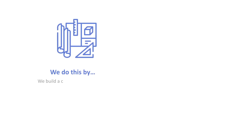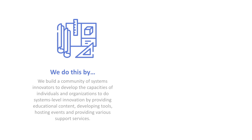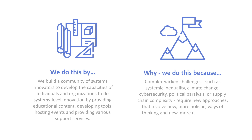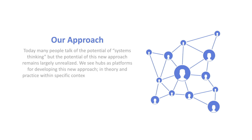Here's what we do and why we do it. We do it by building a community of systems innovators to develop the capacity of individuals and organizations towards actually doing systems-level innovation. We do that by providing educational content, developing toolkits, hosting events, and providing various support services. We do it because complex, wicked challenges such as systemic inequality, climate change, cyber security, political paralysis, or supply chain complexity require new approaches involving more holistic ways of thinking and more networked and collaborative ways of organizing. We're here to make that happen through a community approach.